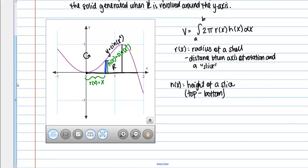Now I'll just put all this information together. We'll come back to the bounds in just a second. I've got 2π, well we said the radius was x, and then we said the height of a shell or of a slice was sine of x squared, dx.